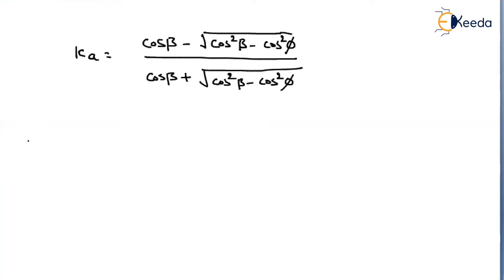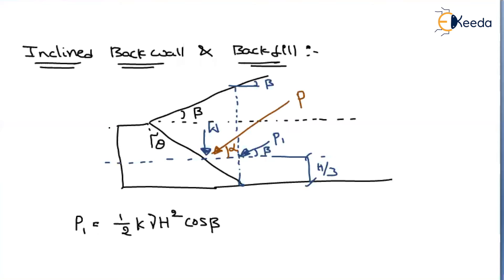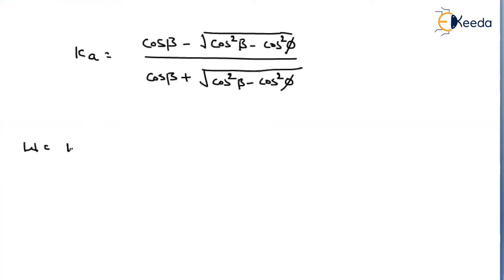Now, what about W? W is nothing but the weight of the soil wedge. Let us say the points are A, B, and C. W is the weight of triangle ABC. Now, how will we find out the resultant earth pressure P?